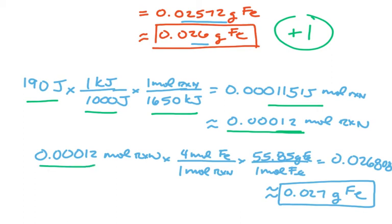Using 0.00012 moles of reaction, and converting to moles of iron then grams (4 moles Fe per mole rxn × 55.85 g/mol), I get 0.026808, which rounds to 0.027 grams of iron.